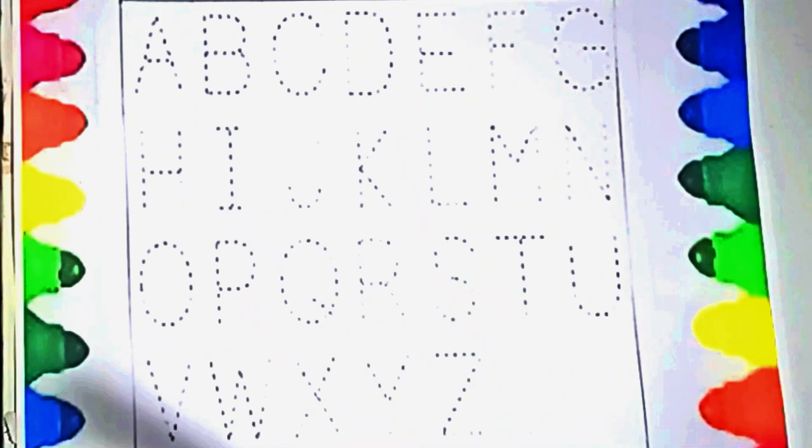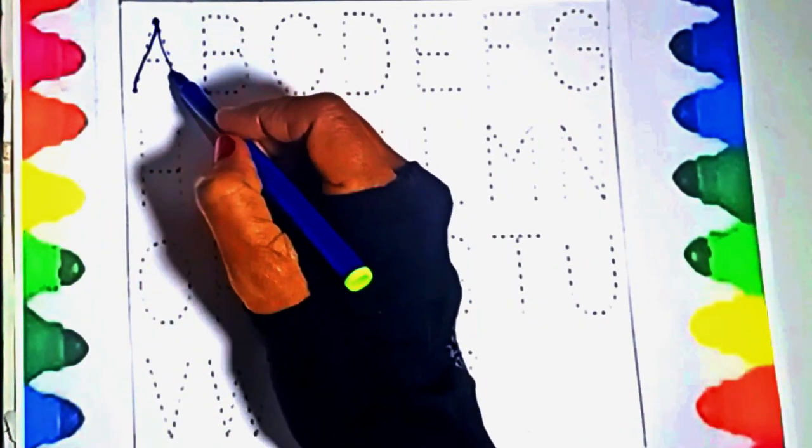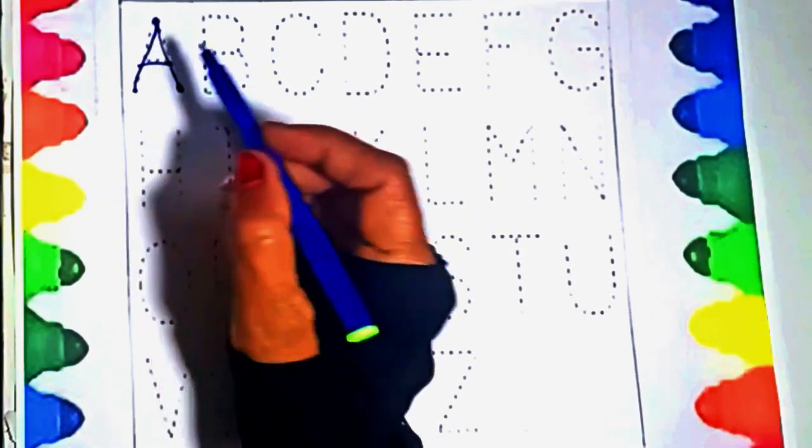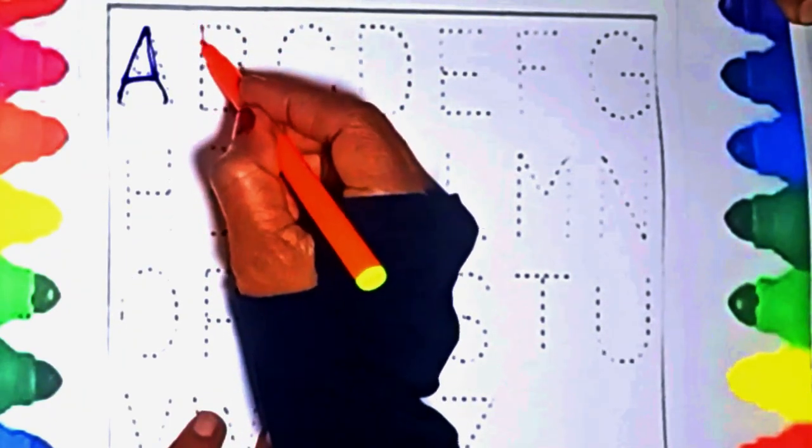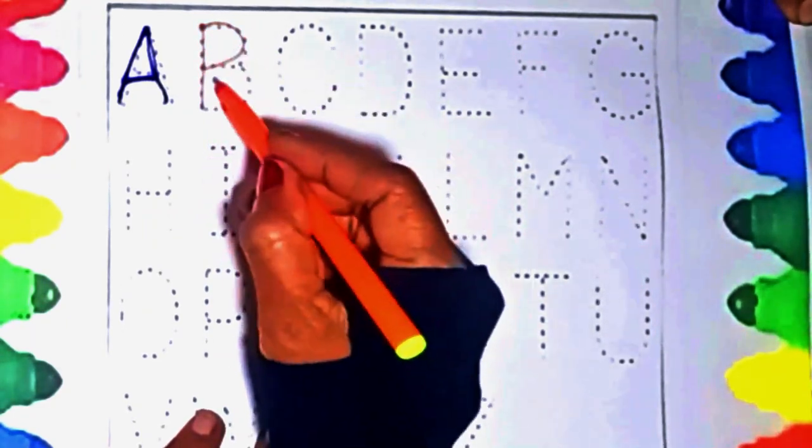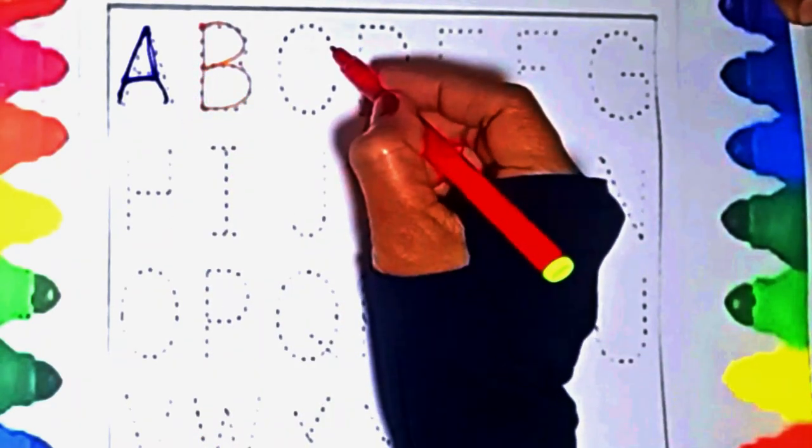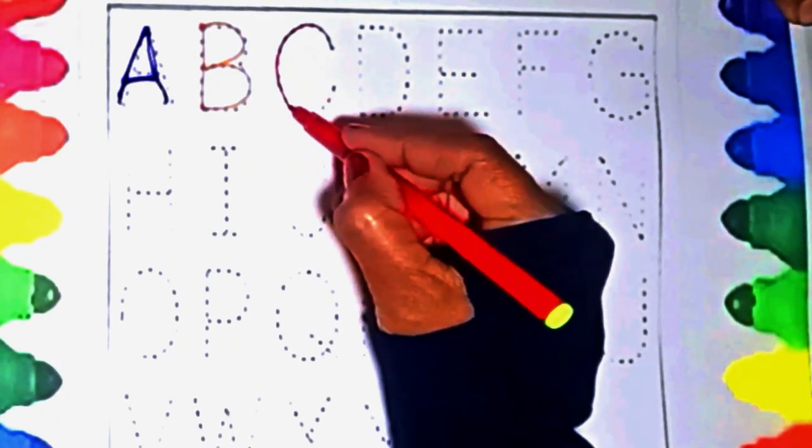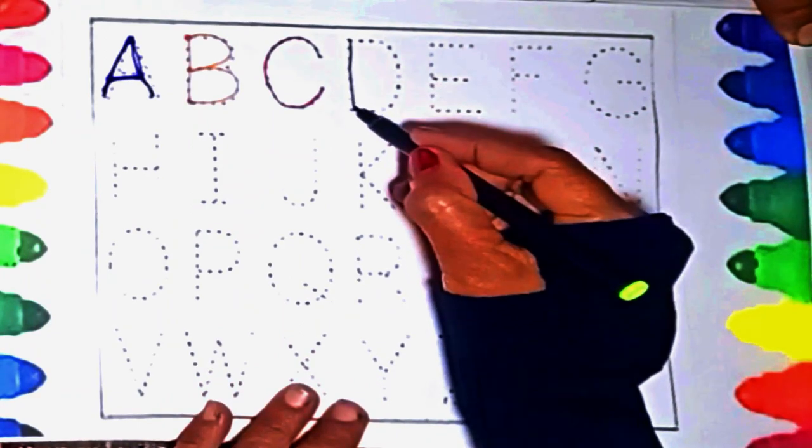Blue color. A, A for apple. Orange color. B, B for ball. C, C for cat. D, D for dog.